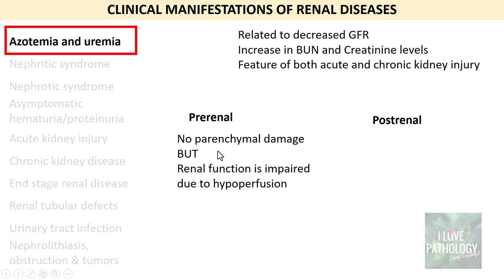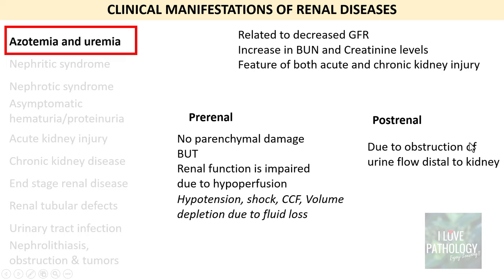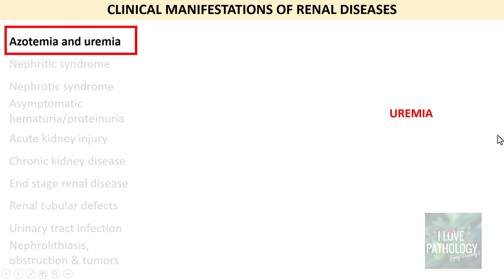Azotemia can be pre-renal or post-renal. In pre-renal causes there is no parenchymal damage, but renal function is impaired because of hypoperfusion — causes include hypotension, shock, congestive cardiac failure, and volume depletion due to various causes resulting in fluid loss. Post-renal azotemia is due to obstruction of urine flow distal to the kidney, and importantly, whenever we have post-renal azotemia it is reversible — if you relieve the obstruction, the azotemia becomes reversible.